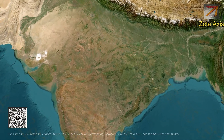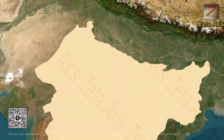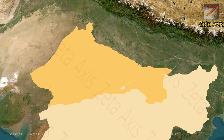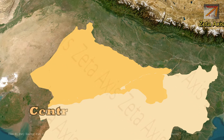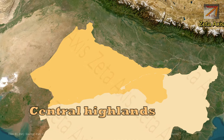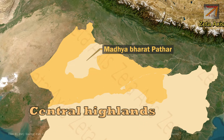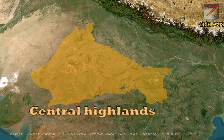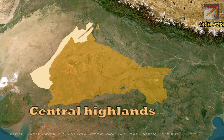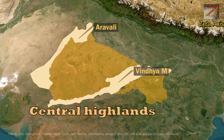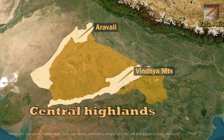Hello friends, welcome to another video of Zeta AXIS and today we are going to see Plateaus of Northern Peninsula. The region is also called Central Highlands and it is not to be confused with Madhya Bharat Pathar, which in many books is translated as Central Highlands. Since we have already discussed Aravlis and Vindhyachal Mountains in separate videos, we are not going to discuss them here. Links will be available in the description.